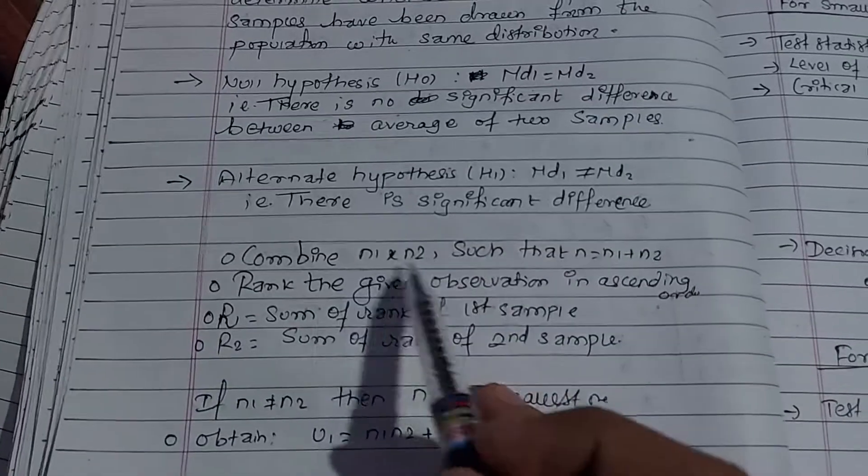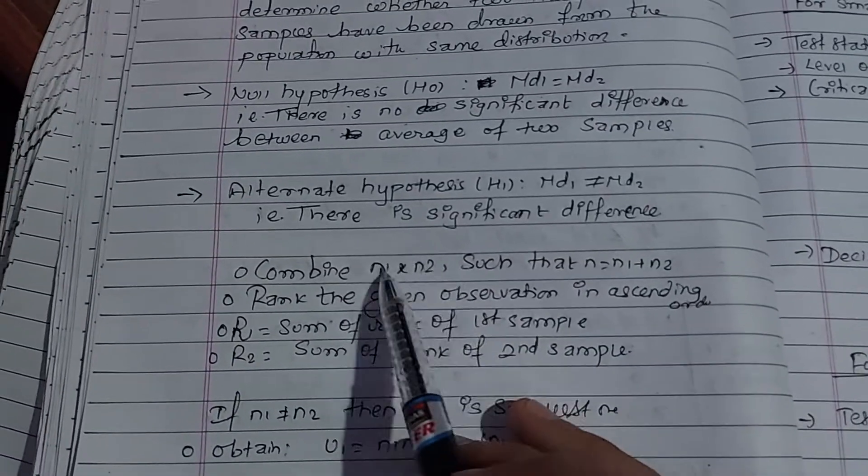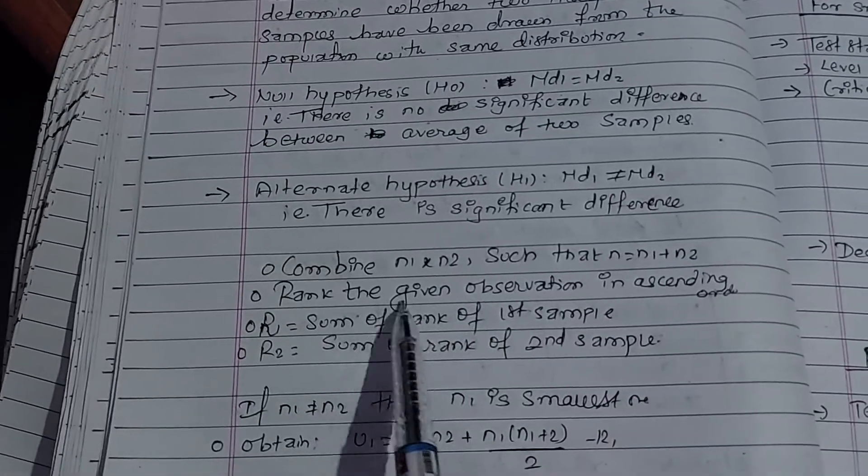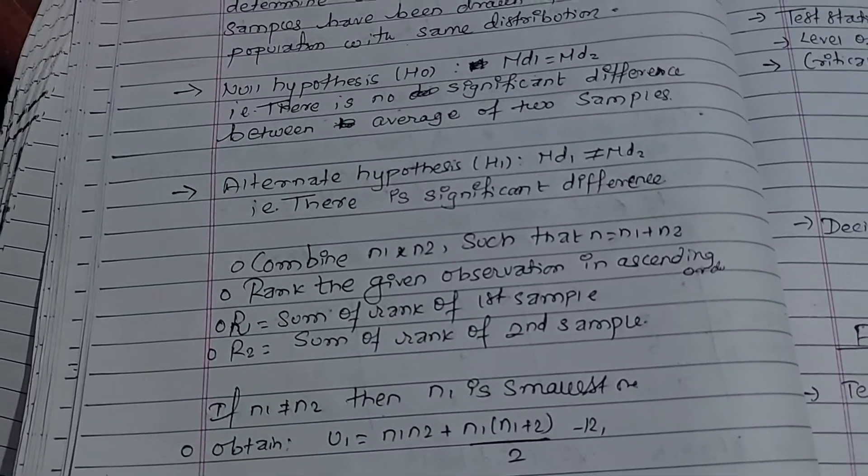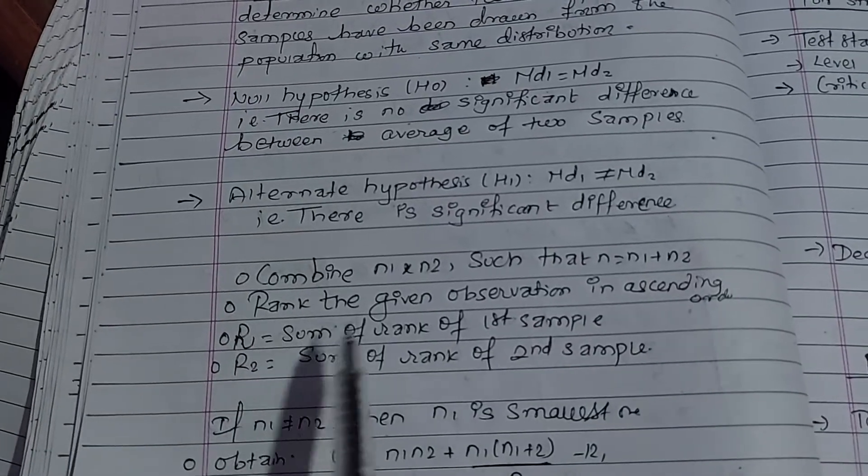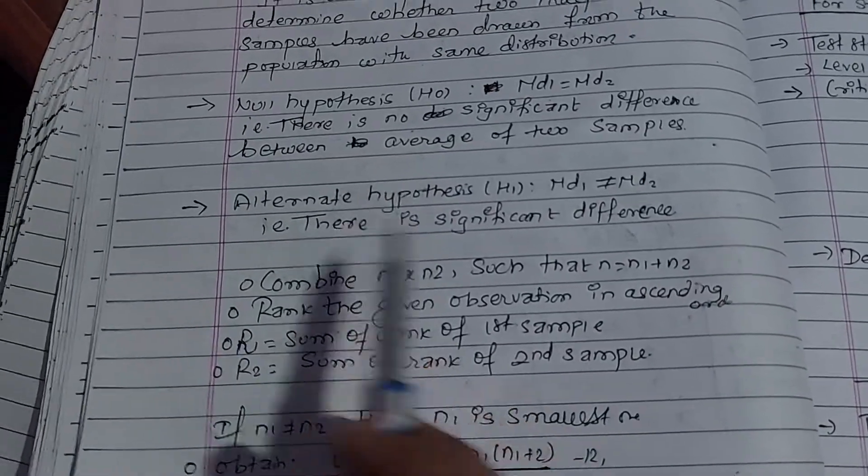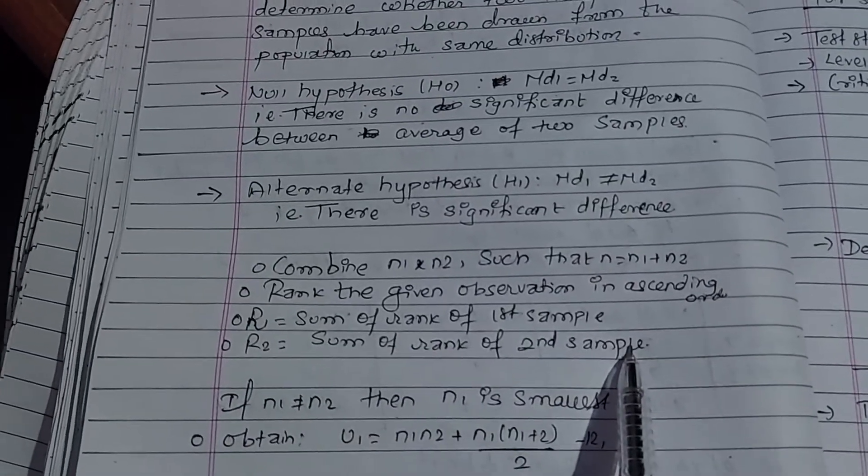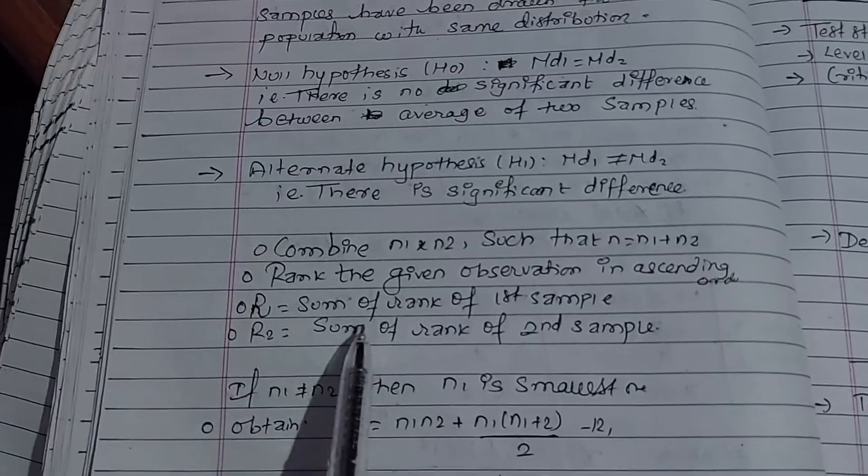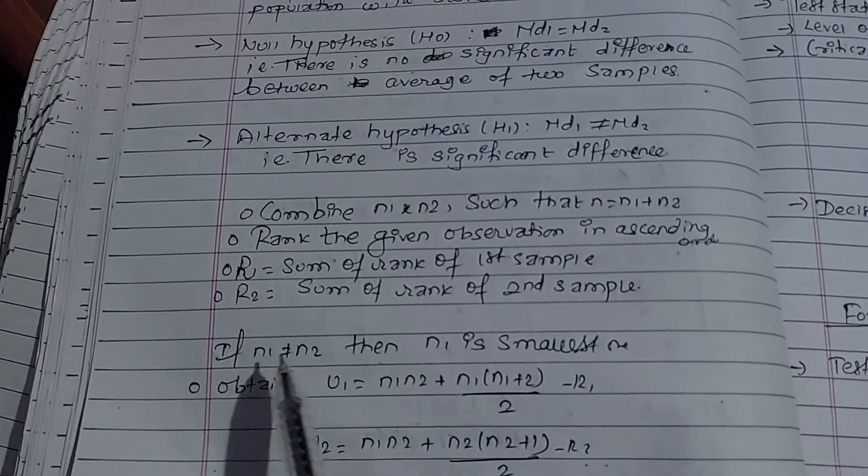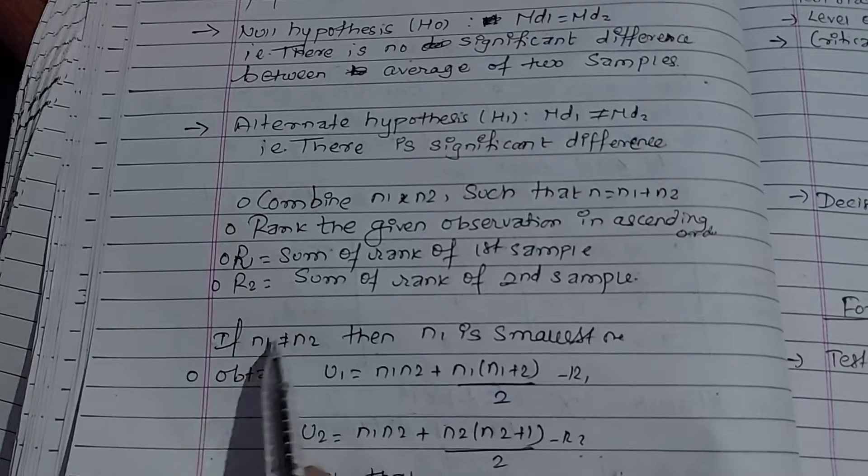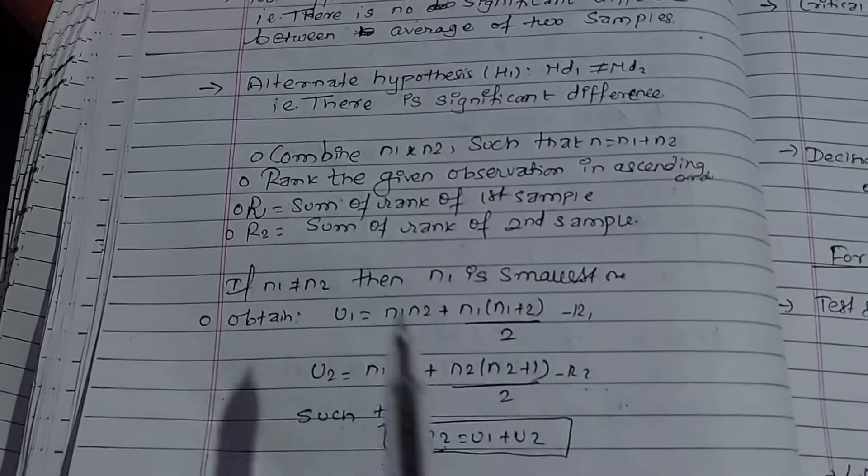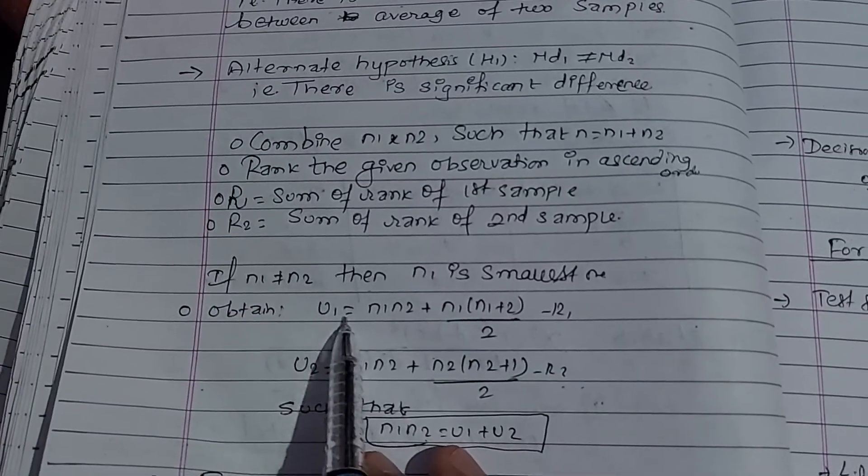The procedure involves combining both samples. Let n1 and n2 be the sample sizes. You combine the data from both samples into one, then rank the values in ascending order. After ranking, assign each value to its original sample.